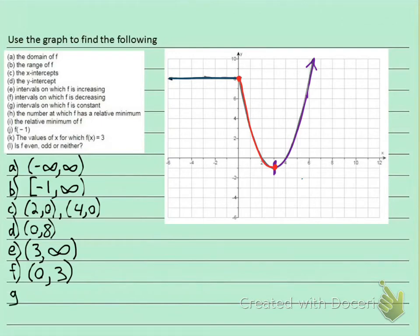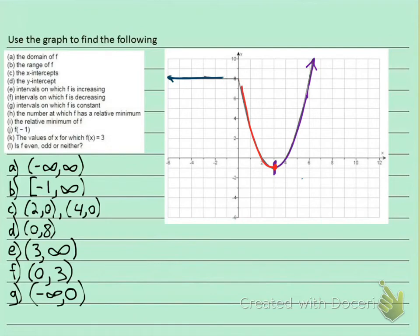Part G: the values at which it's constant — the blue section. It's constant from negative infinity all the way to x = 0, so the interval is (-infinity, 0). Don't get fooled: you might see the y value of 8 up there, but that 8 is your y value. You only want to give x values here.